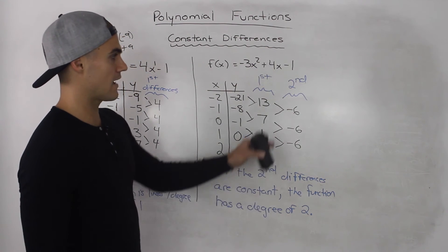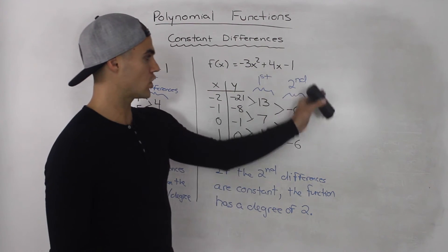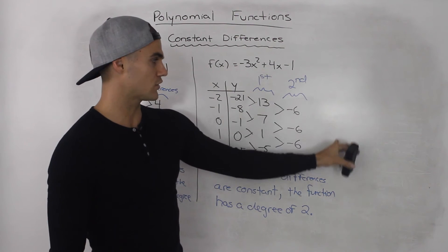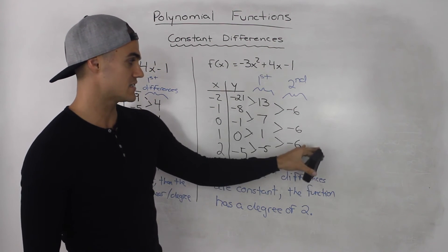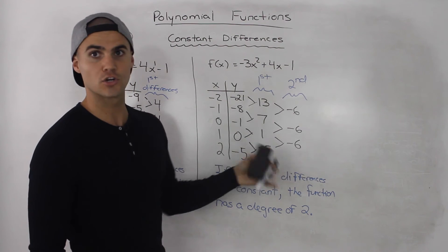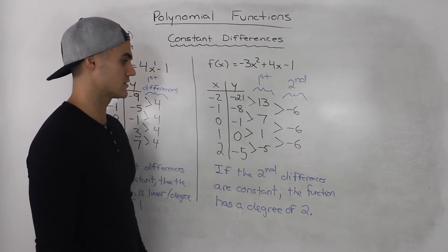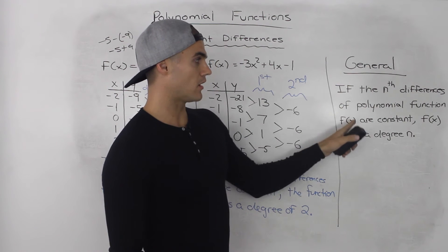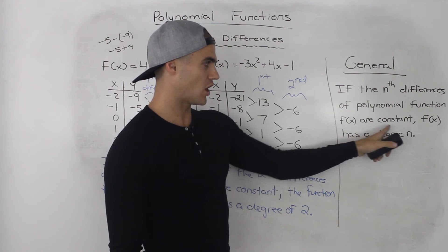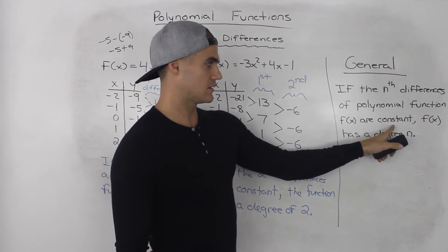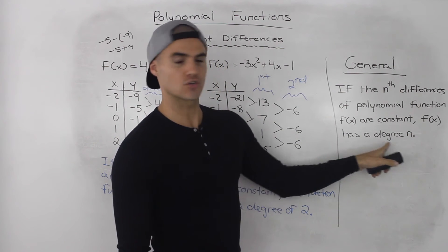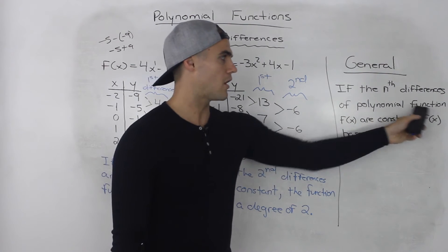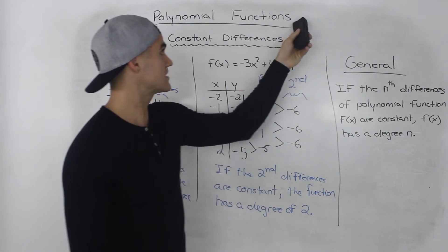The pattern is: whichever column — first, second, third, and so on — has the constant differences, that is the degree of the function. The general observation is: if the nth differences of a polynomial function f(x) are constant, then f(x) has degree n. We could keep going to find third differences, fourth differences, etc. Keep in mind that constant differences only apply to polynomial functions.